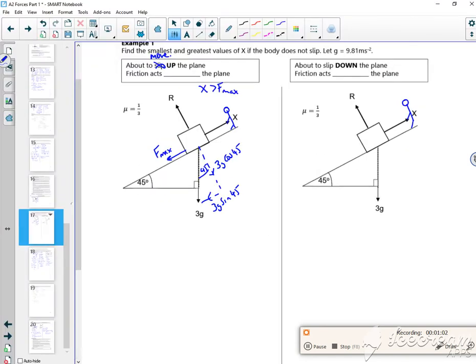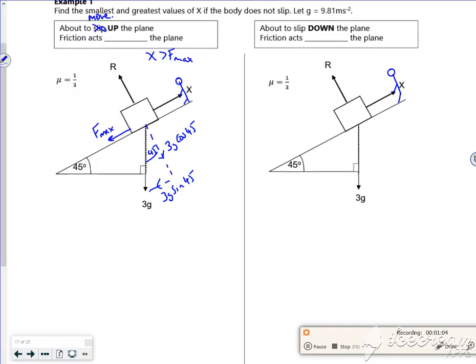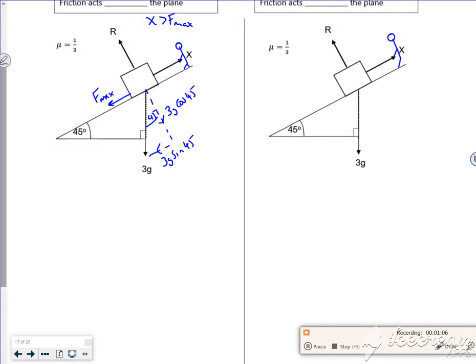So, oh, it's all breaking. I've got to be quick. F equals ma perpendicular. Perpendicular. So perpendicular going up minus perpendicular going down is zero because it's in equilibrium. So R minus 3g cos 45 is zero. R is 3g cos 45.